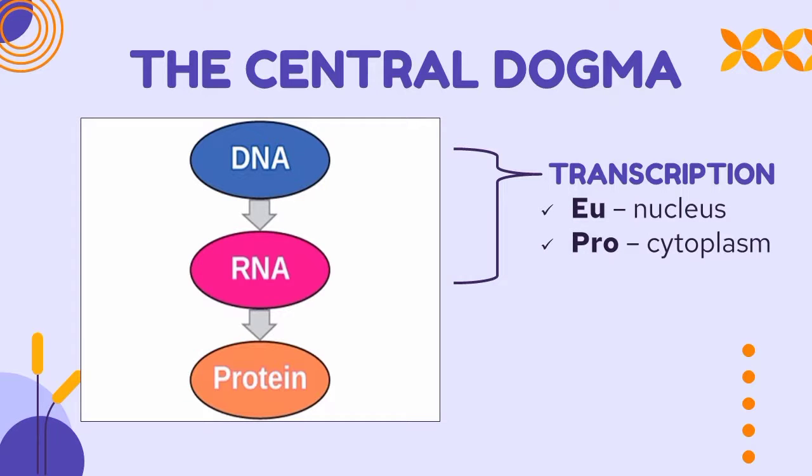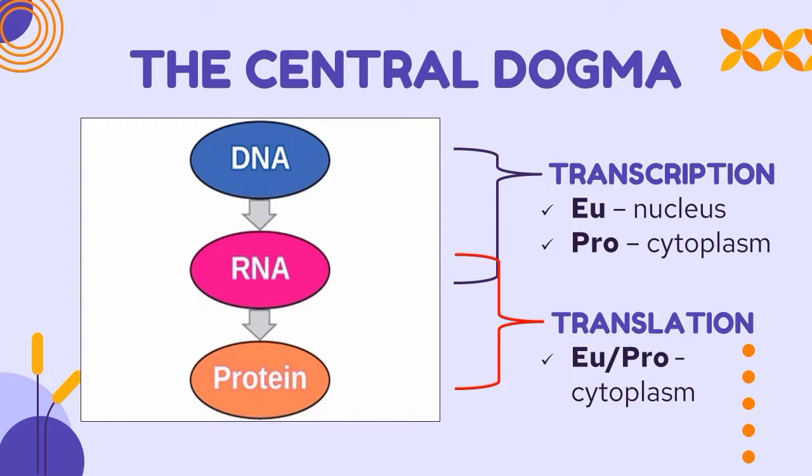So in eukaryotic cells, transcription takes place in the nucleus, while in prokaryotic cells, it takes place in the cytoplasm. And for the other process which RNA encodes for protein, it is what we called translation. Translation is taking place in the cytoplasm of both eukaryotic cells and prokaryotic cells. But since we don't have enough time to discuss these two processes, we're going to focus on the first process which is the transcription.